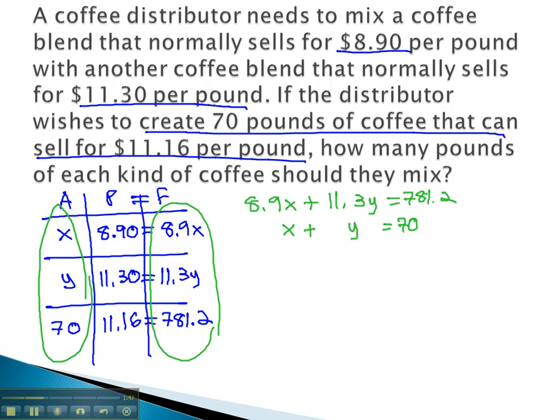We can now use the addition method to solve this problem. We will need to multiply the second equation by something. To eliminate the x's, let's multiply by negative 8.9.